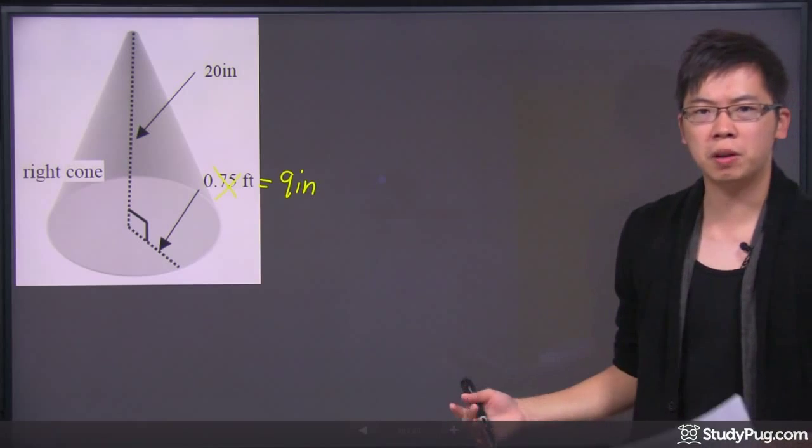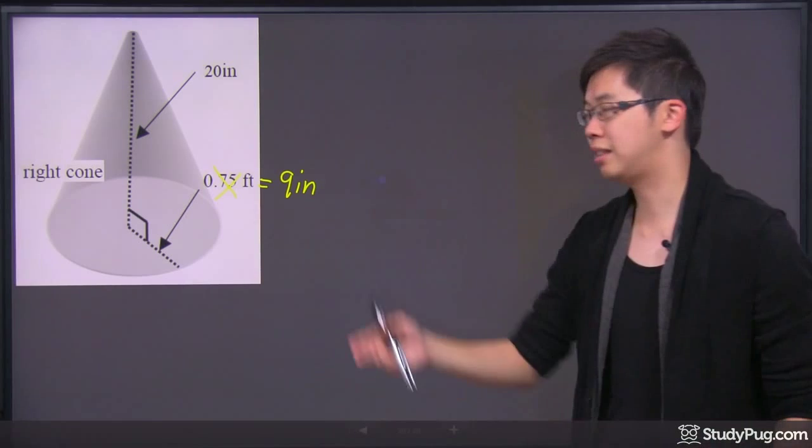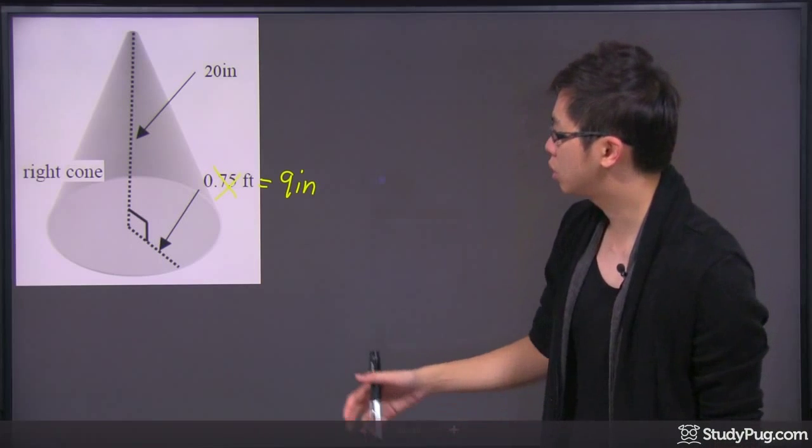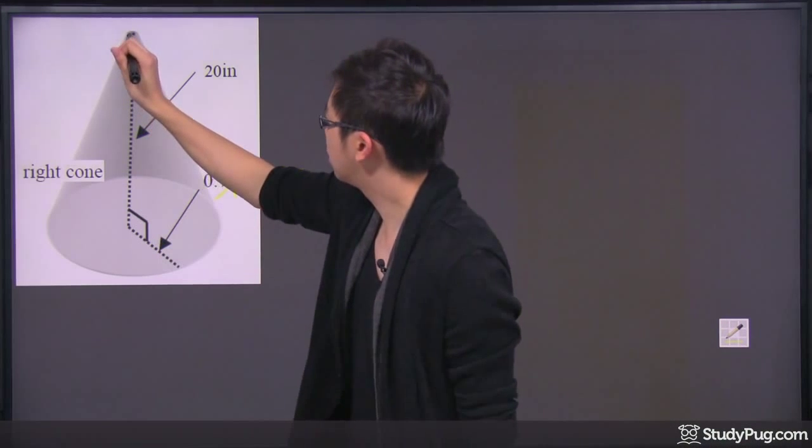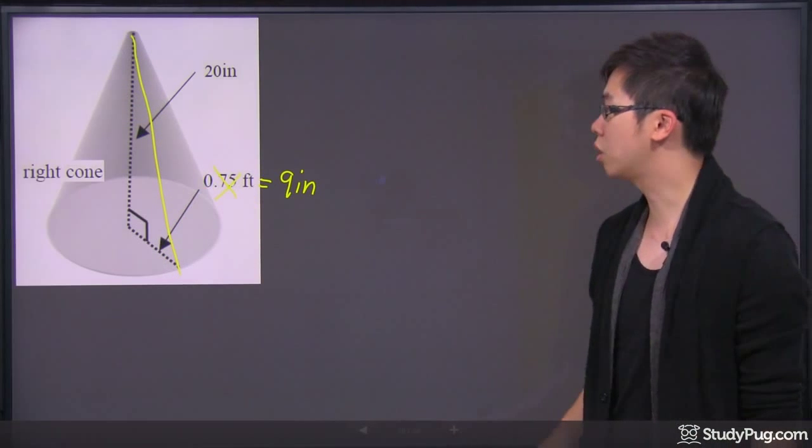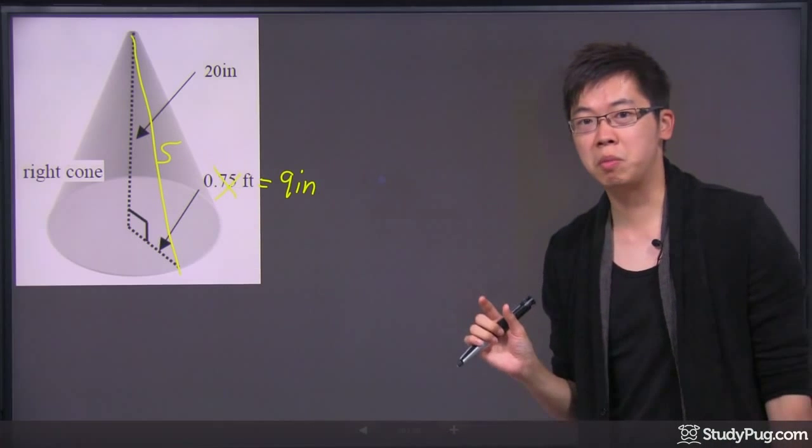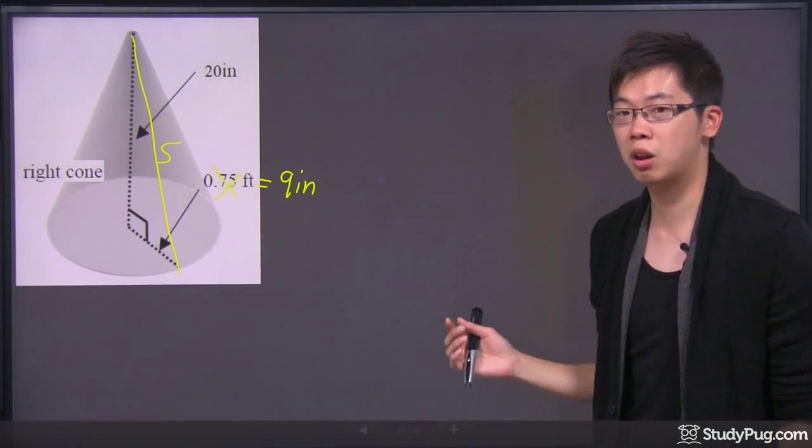Now, we can put things together. Before we go ahead and calculate the surface area, there's one more thing that we're missing. It's the slanted side that we're missing. I'm just going to draw a line down this way to represent the slanted side of the cone. It's called the S. We need that piece of information for the later calculations.